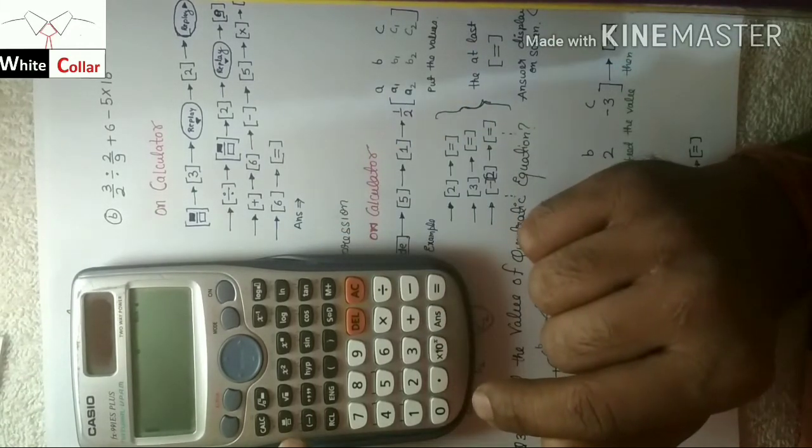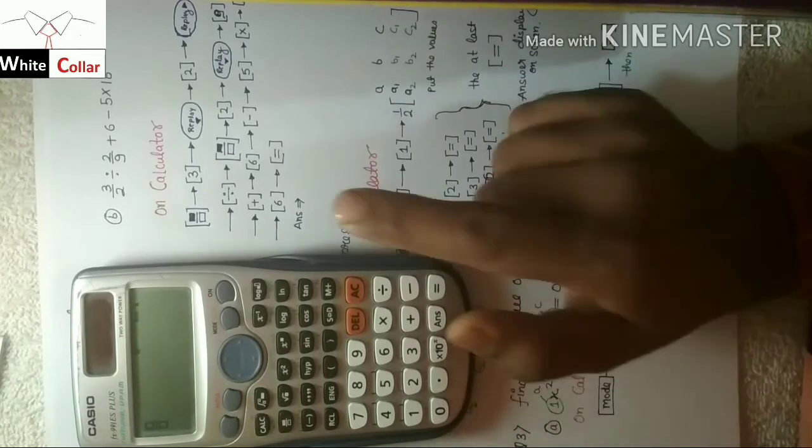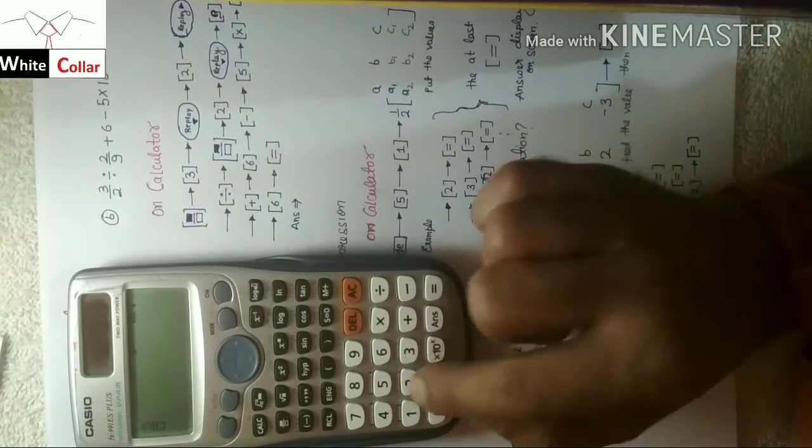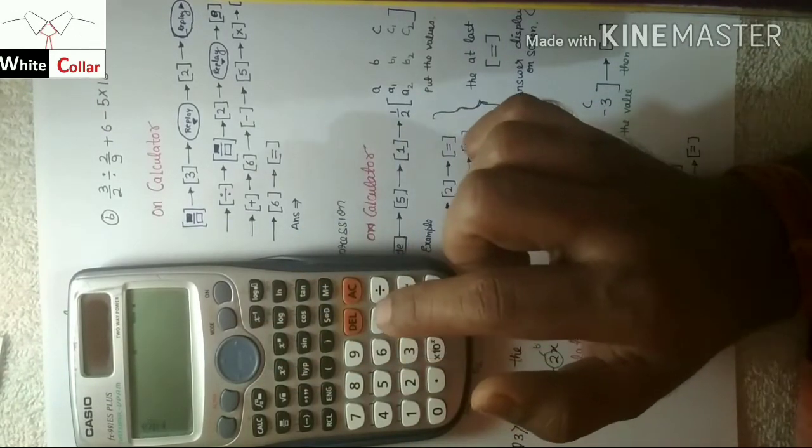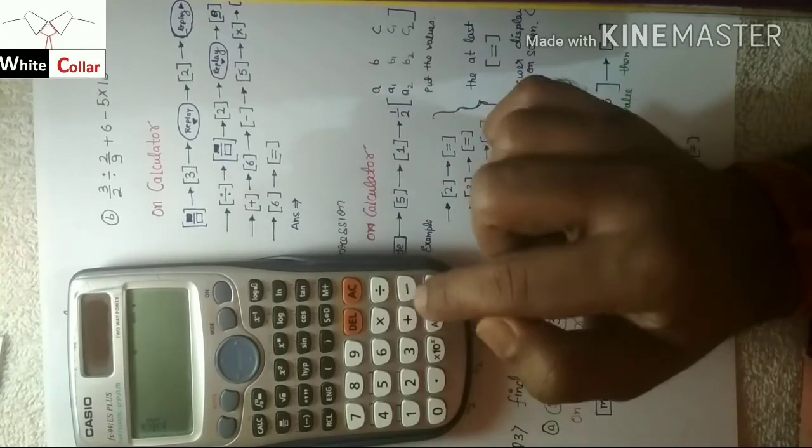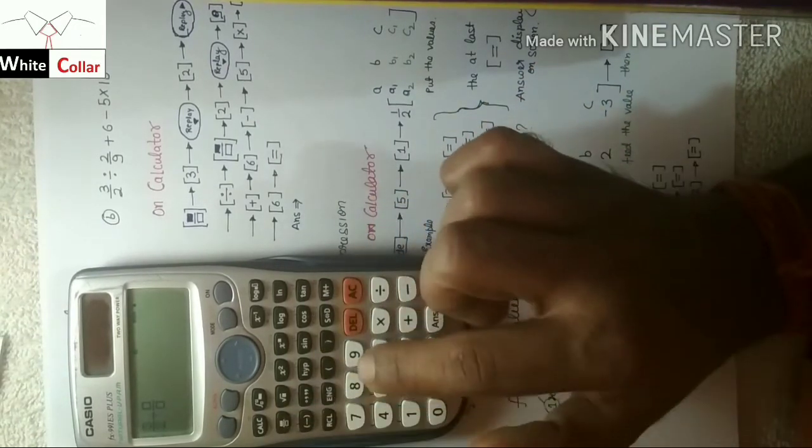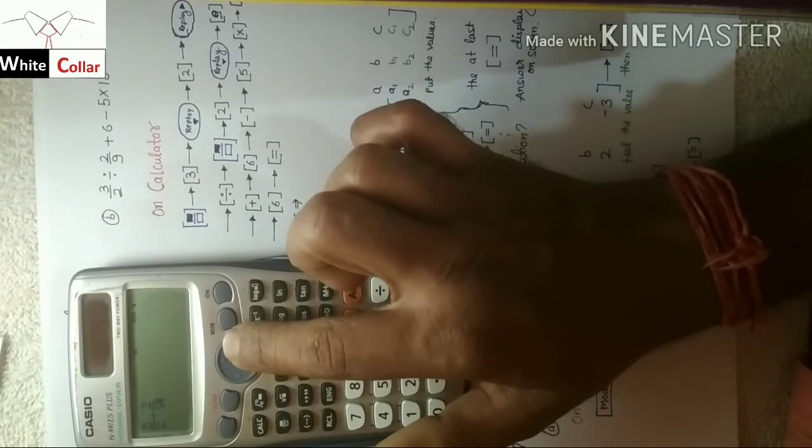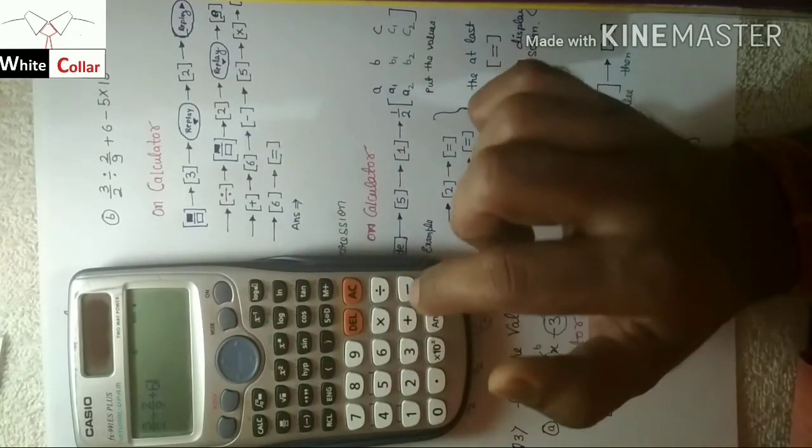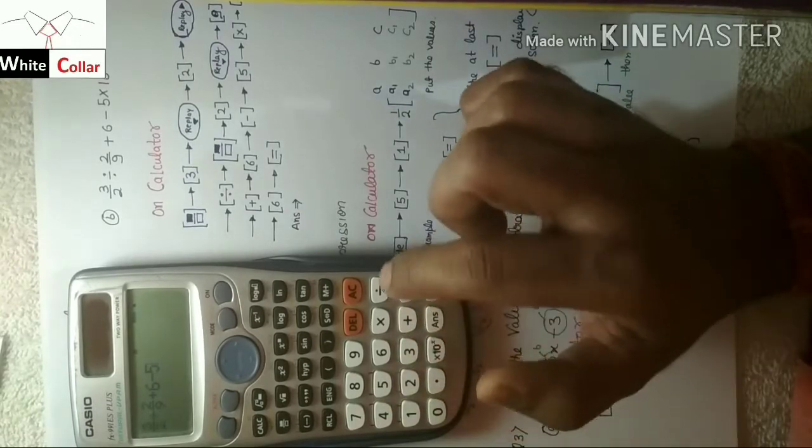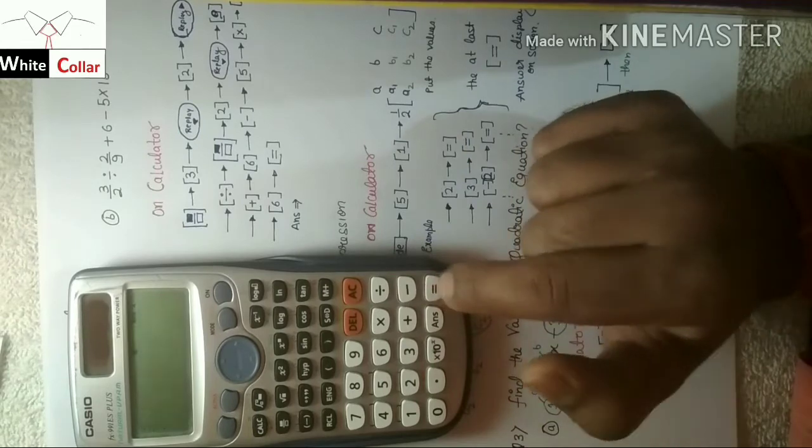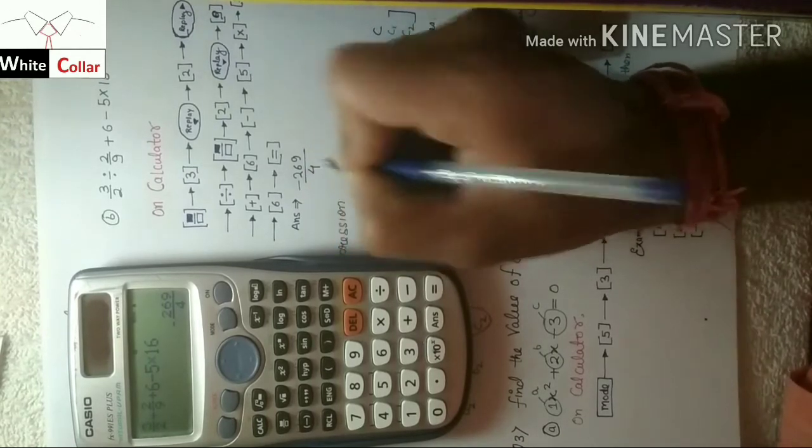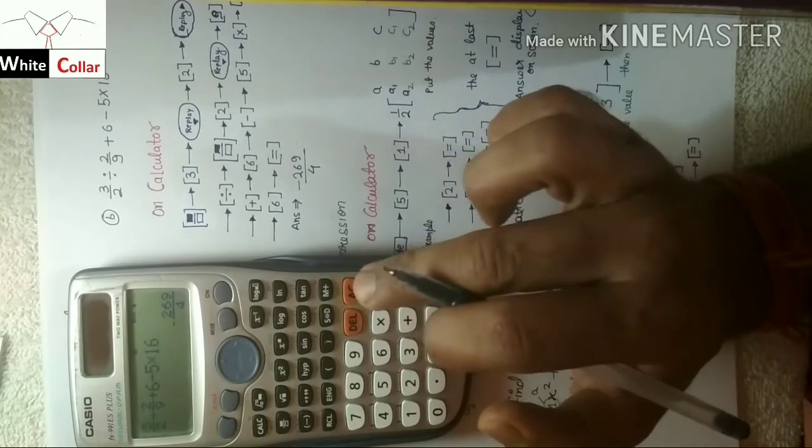Now let's start with the second equation on the calculator. You have to tap this word, then 3, then downward, then 2, then this side, then 3. Then we are equal to divided by 2, then 3, then 6 minus 5, then 6 and minus 269 by 4. Now what you have to do? You have to click on equals.